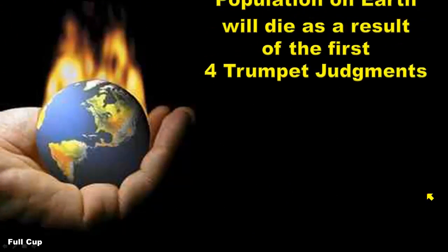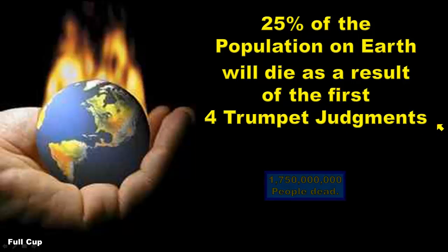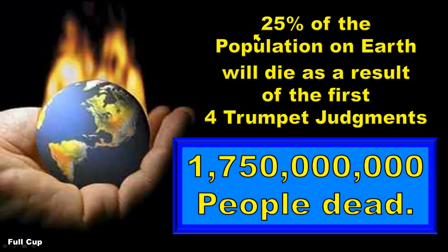What will happen after these judgments are released? The Bible says that 25% of the population on earth will die as a result of the first four trumpet judgments. With our population today at seven billion on earth and growing, 25% of that would be one billion, 750 million people dead as a direct cause of the first four trumpet judgments.